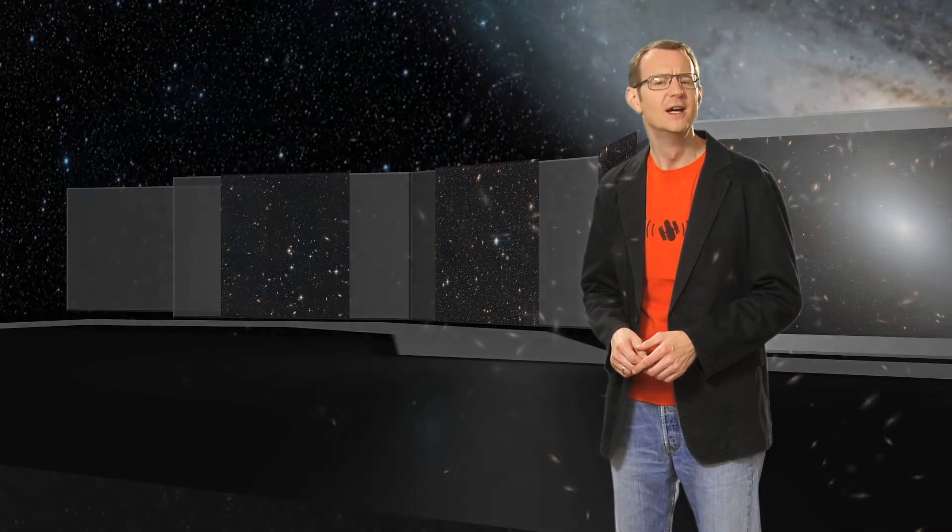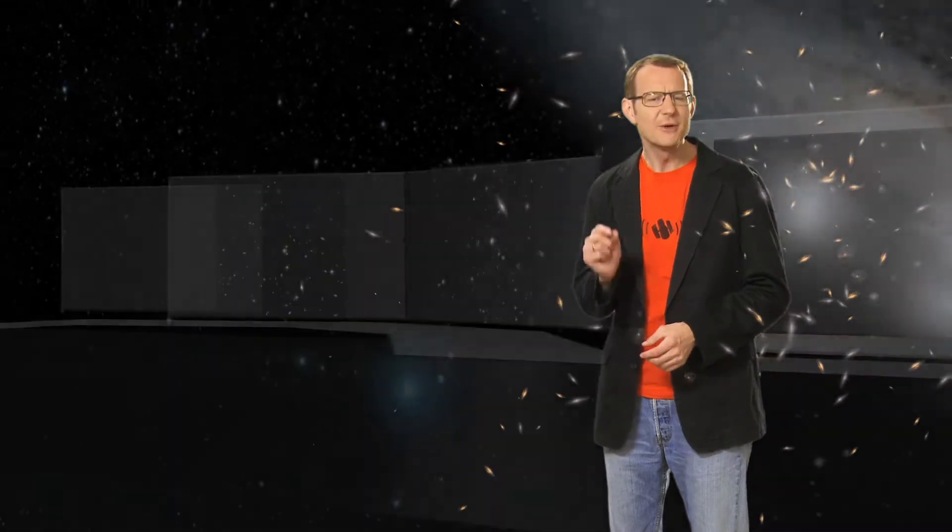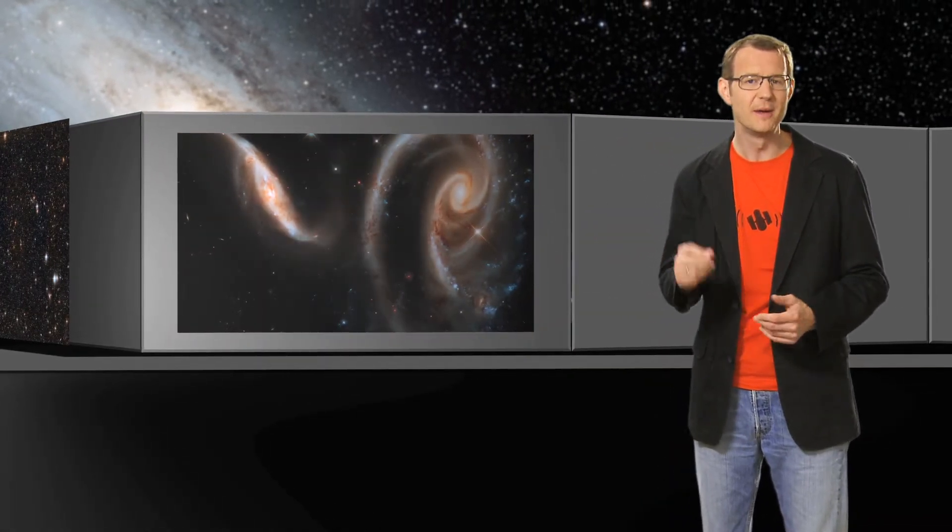Hello and welcome to another episode of the Hubblecast. Astronomers have observed millions and millions of galaxies across the night sky. But only a tiny fraction of them, only a few tens, are actually close enough to us so that we can distinguish the individual stars that they're made of. And that's what makes this small group of galaxies kind of special for us astronomers.